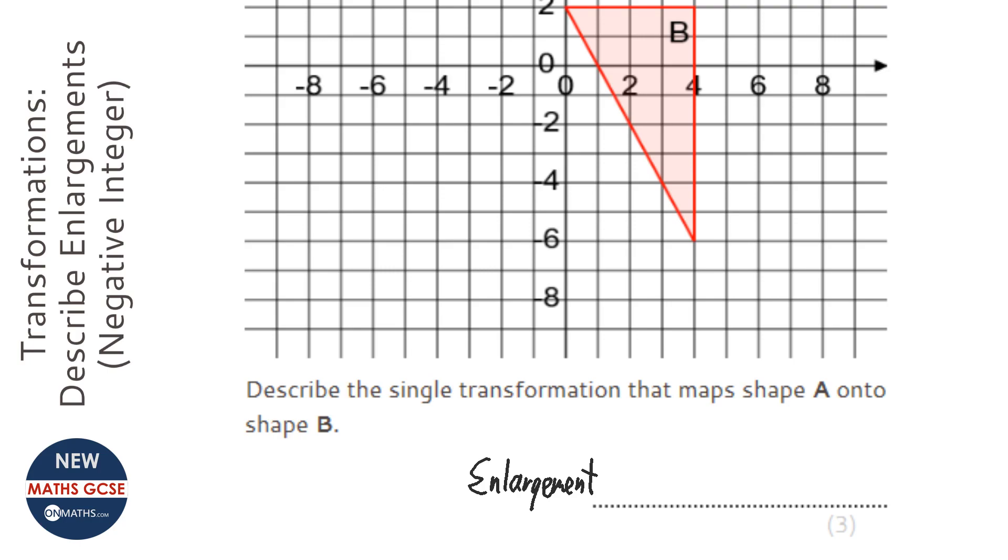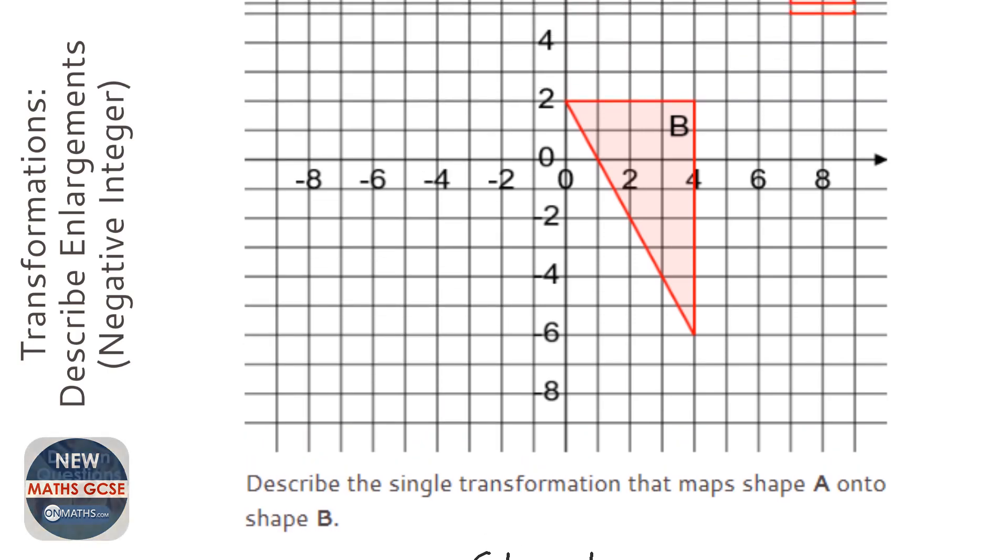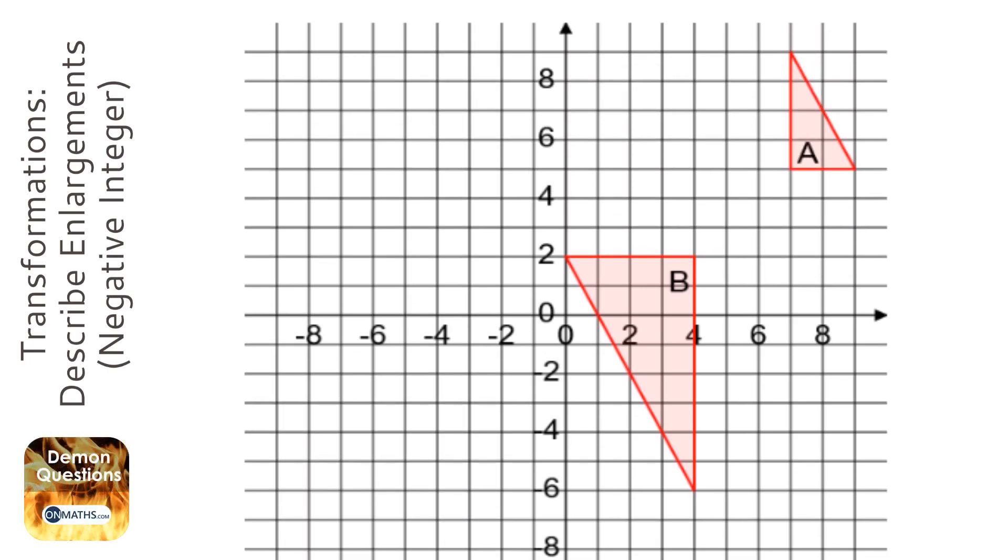Now to work out what the scale factor is, I think the problem is it's two wide and then it becomes four wide, so you'd think the scale factor was two, but it's kind of flipped over, so we're going to start with the ray lines first.